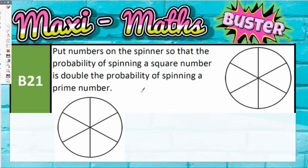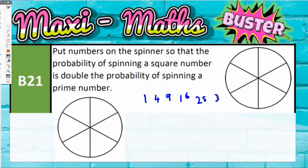First, we need to identify square numbers and prime numbers. Square numbers: 1 squared is 1, 2 squared is 4, 3 squared is 9, 4 squared is 16, 5 squared is 25, 6 squared is 36. Prime numbers: 2, 3, 5, 7, 11, 13.